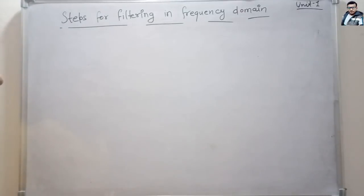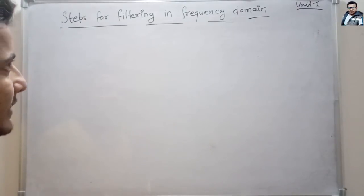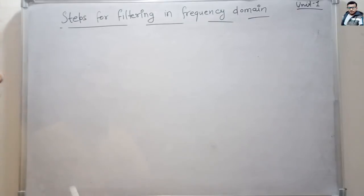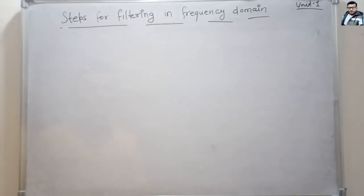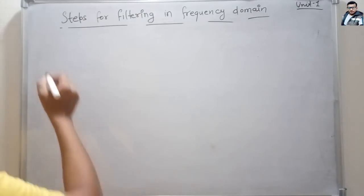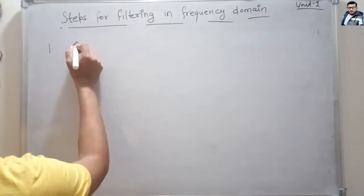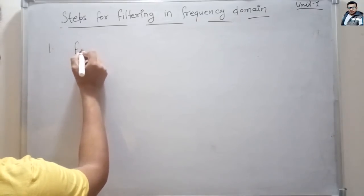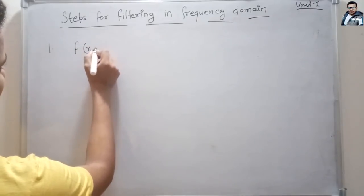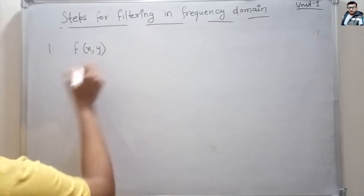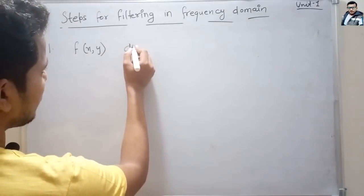In this video we will see the steps for filtering in the frequency domain. There are various steps and we will go through each step one by one to filter our image. The first step is to take our image, that is f(x, y), of dimension M×N.